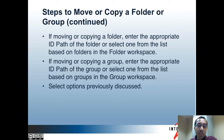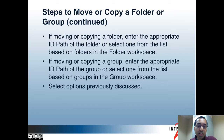If you're copying or moving the current folder, you have to specify the destination folder. If you're copying or moving another folder to the current folder, then you have to specify the other folder. If you're copying or moving a group to the current folder, then you must specify the group. In all of these cases, you have to either enter in the ID path of the object, or you can select from a list if you have objects in the group and folder workspaces. Then the last step is to specify the options as previously discussed.